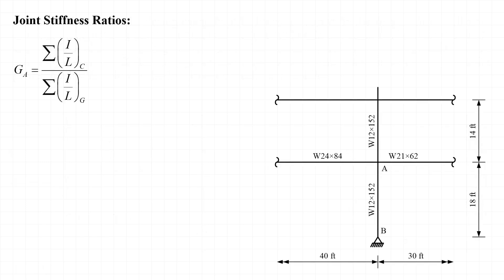The first step in determining the effective length factor for strong axis buckling is to determine the joint stiffness ratios. G is equal to the sum of I over L for the columns framing into the joint divided by the sum of I over L for the girders framing into the joint. The lengths of the members are given in the sketch.